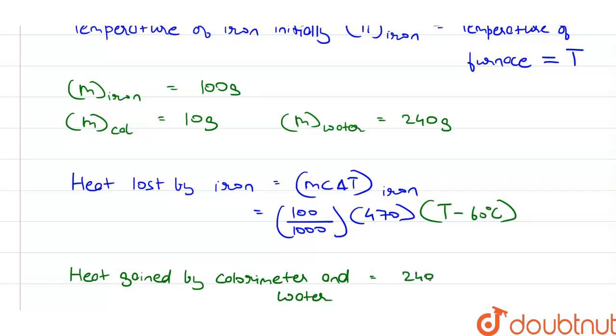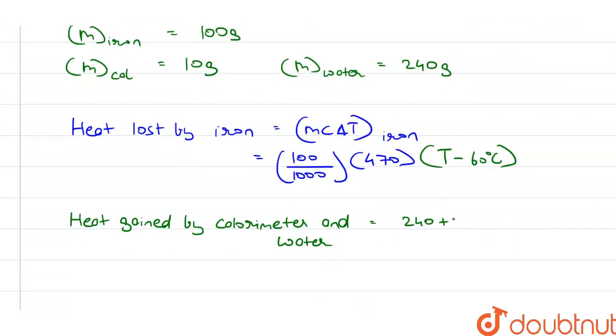240 grams of water plus the water equivalent of calorimeter equal to 10. Since they are in grams, we need to convert it into kilograms, so dividing by 1000.